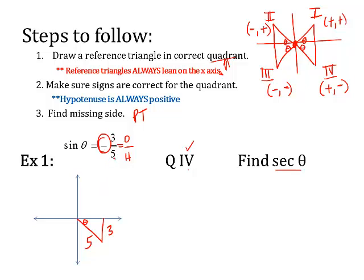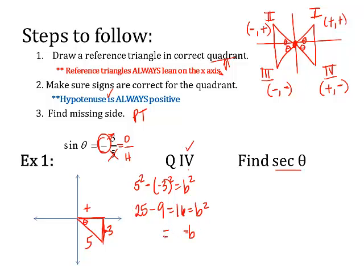That means either the top number is negative or the bottom. The rule says the hypotenuse is always going to be positive, so it can't be the five. The five is not negative, so the three must be negative. That makes sense because down here in quadrant four the y values, which is the vertical change, are negative. So it should be negative three. Whatever length this other side is represents our x value, and it will be positive because it's in quadrant four. To find that side, I'm going to use the Pythagorean theorem: five squared minus negative three squared equals whatever this side is squared. That's 25 minus nine, which gives me 16. So that side squared equals 16.